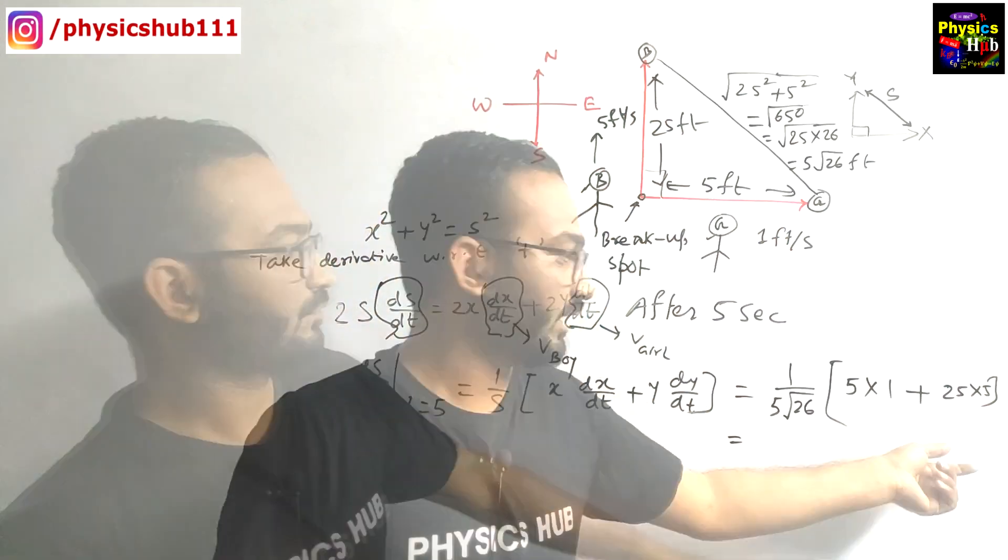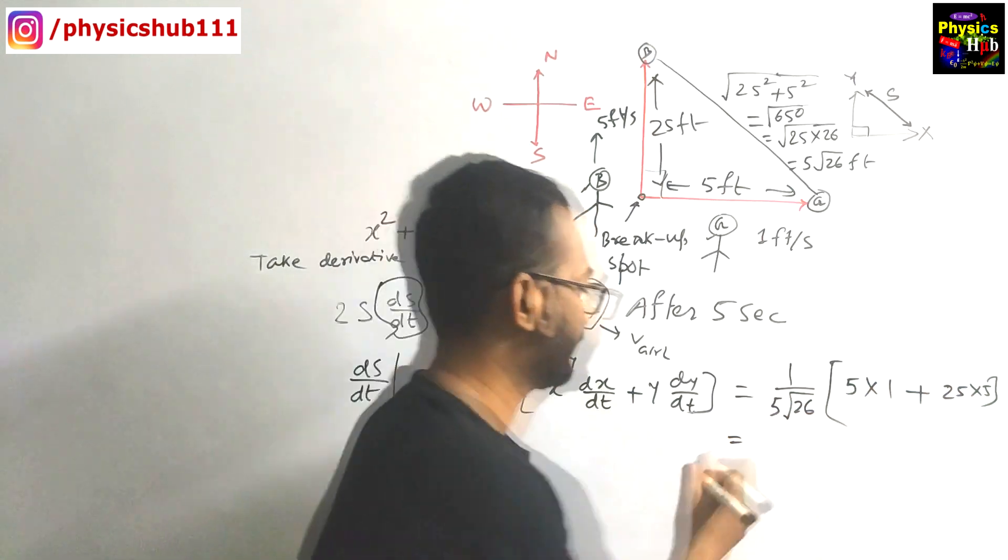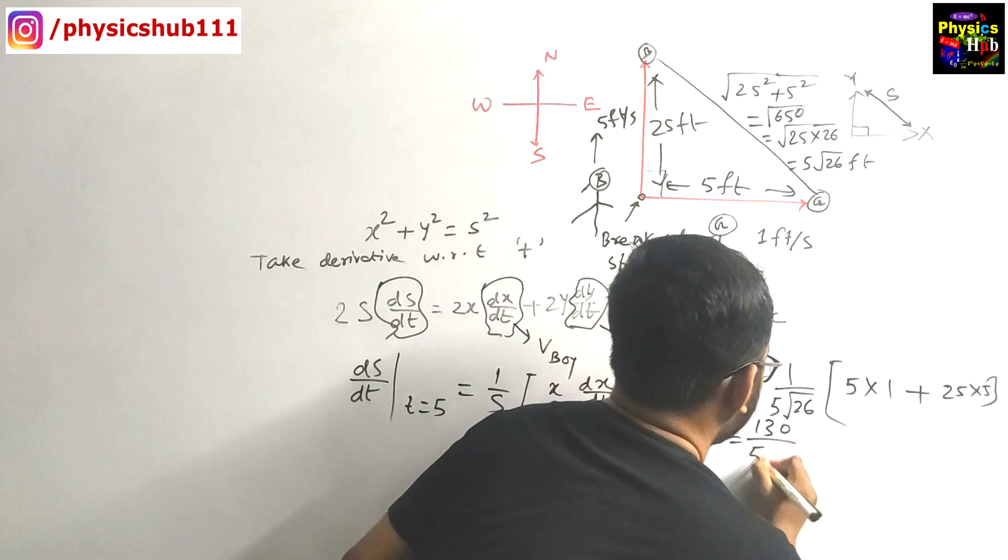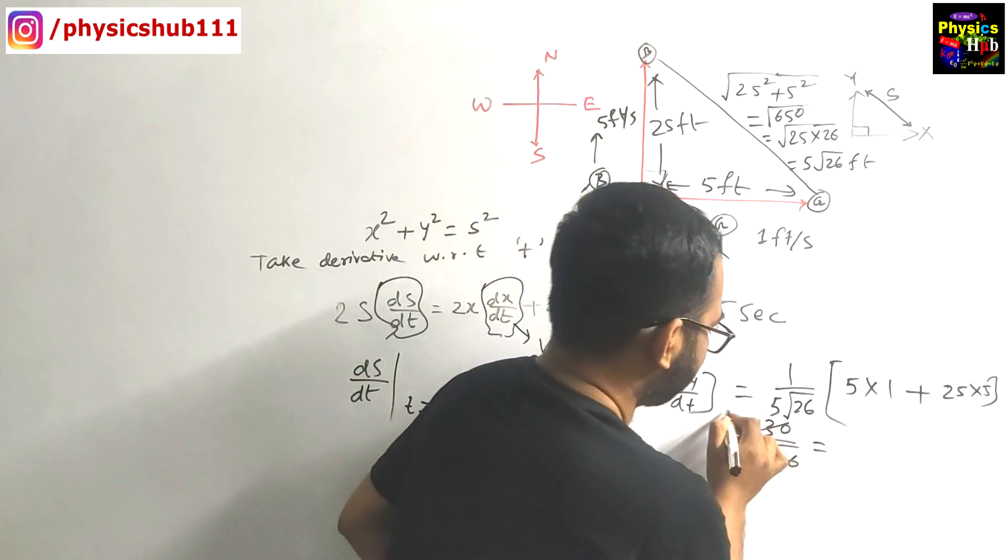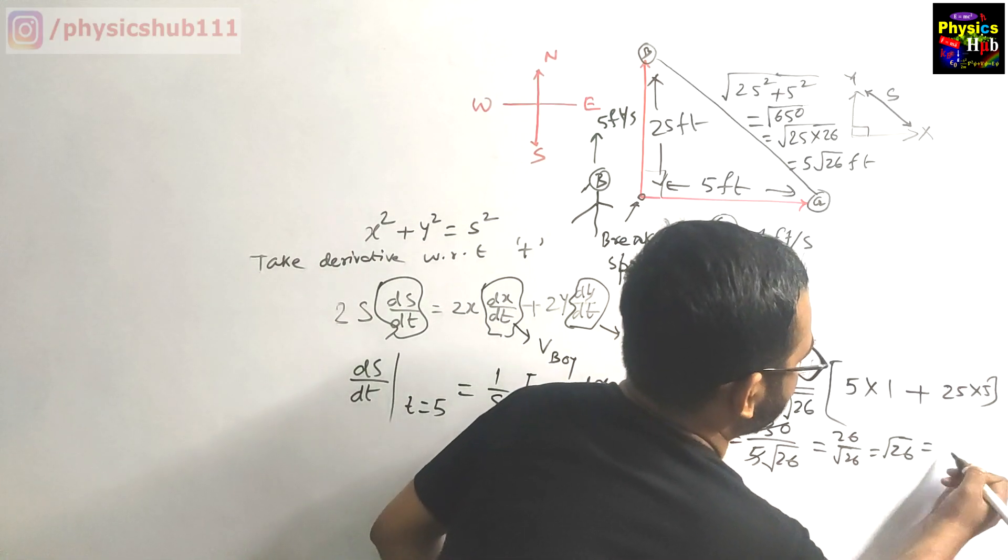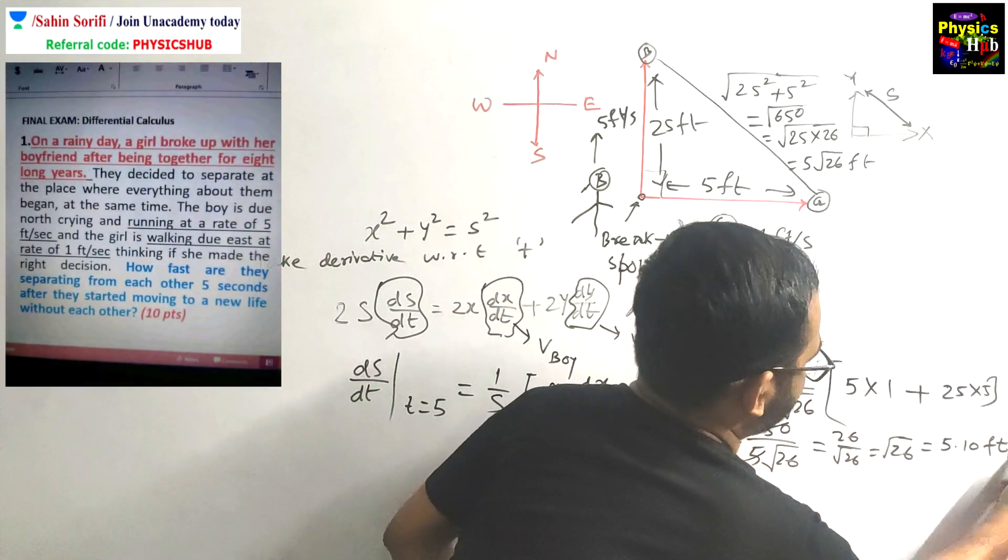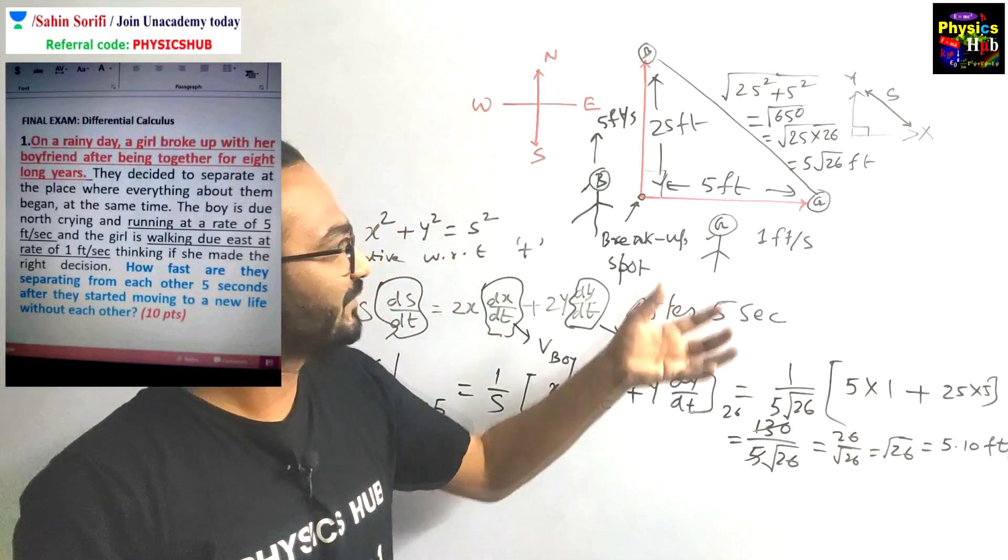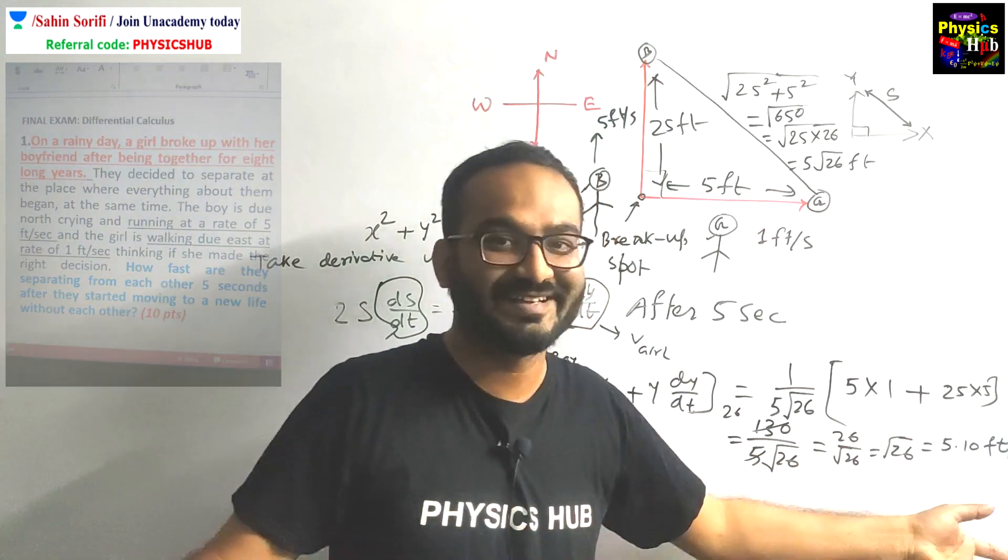So what will it give you? 5 × 1 + 25 × 5 = 5 + 125 = 130. So 130/(5√26) = 26/√26 = √26, which gives you roughly 5.10 feet per second. So they are separating from each other with a velocity of 5.10 feet per second to begin a new life.